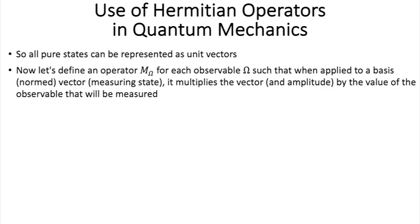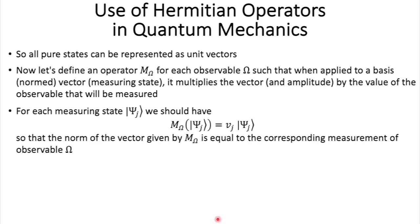Now, let's define an operator, m omega for each observable omega, such that when applied to a basis vector, one of the omega states, it multiplies the vector, and therefore its amplitude, by the value of the observable that will be measured. And so, for each measuring state psi j, we should have something like this: m omega applied to psi j is equal to vj times psi j. In other words, the psi j would be the eigenvectors for the m omega operators, and the vj's will be the eigenvalues. And that implies that the norm of the vector given by m omega is equal to the corresponding measurement of the observable omega.